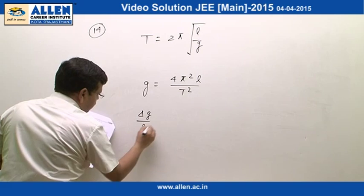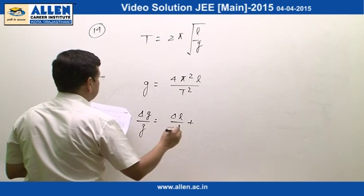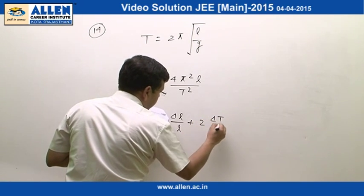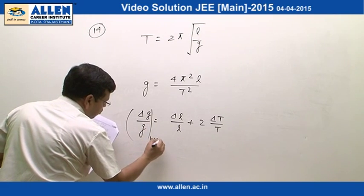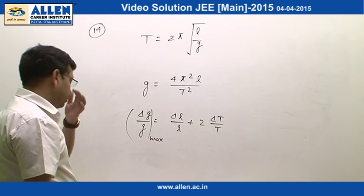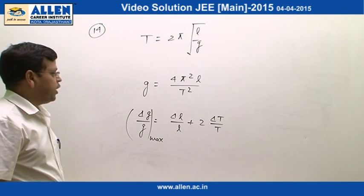Delta g over g will be equal to delta l over l plus twice of delta T over T. Obviously, we are calculating the maximum possible error and we are assuming that both the errors are combining in the same direction.